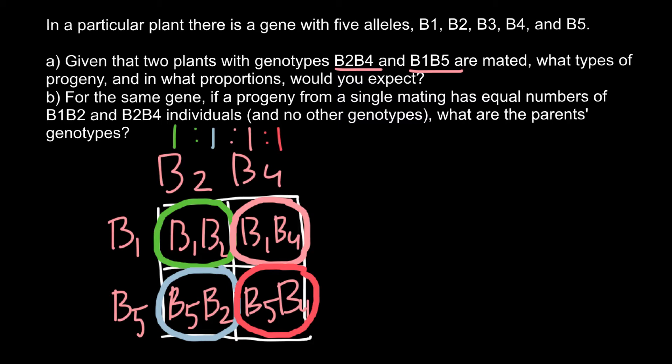Question B: For the same gene, if progeny from a single mating has equal numbers of B1B2 and B2B4 genotypes and no other genotypes, what are the parental genotypes? Here is the solution. You can solve such a problem easily, even if it doesn't occur right away.